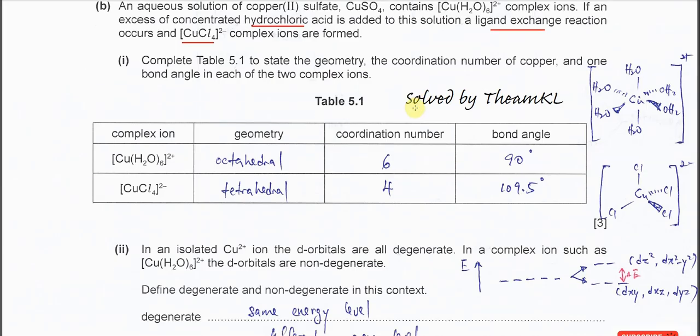First you need to know how it looks like when it has certain coordination numbers. For hexaaqua copper(II) ion, six water molecules form six dative bonds with the copper. Therefore it has coordination number 6. When it forms six coordination number, the geometry is octahedral. When it's octahedral, all the bond angles are 90 degrees.